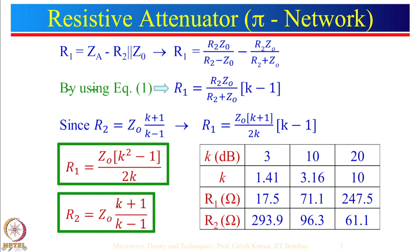If K is very large, the (K+1)/(K-1) expression becomes approximately 1, so R2 will be approximately equal to Z0. If K is very large, K² will be much greater than 1, so we can neglect smaller terms, and the expression for R1 becomes approximately Z0 multiplied by K divided by 2.